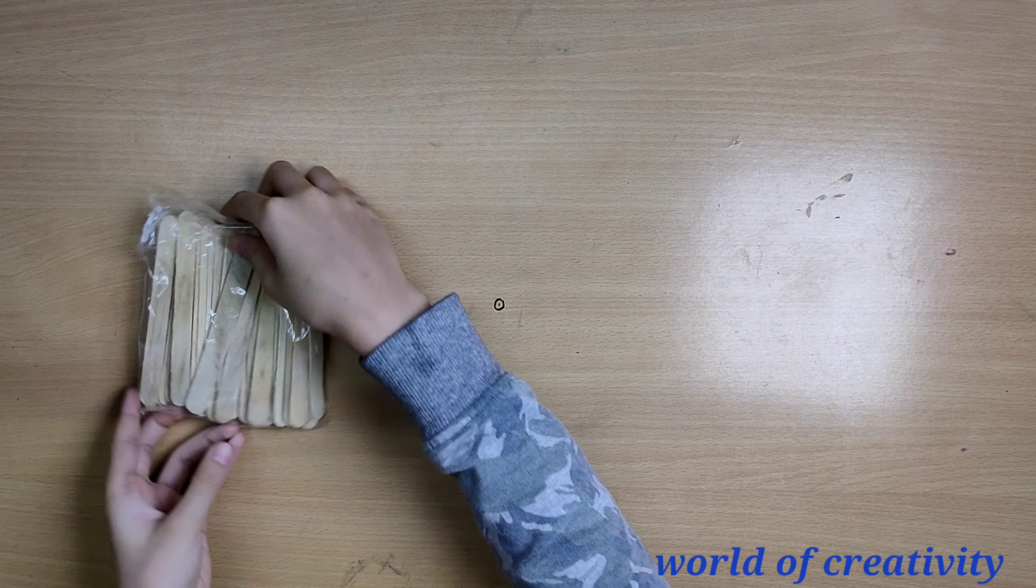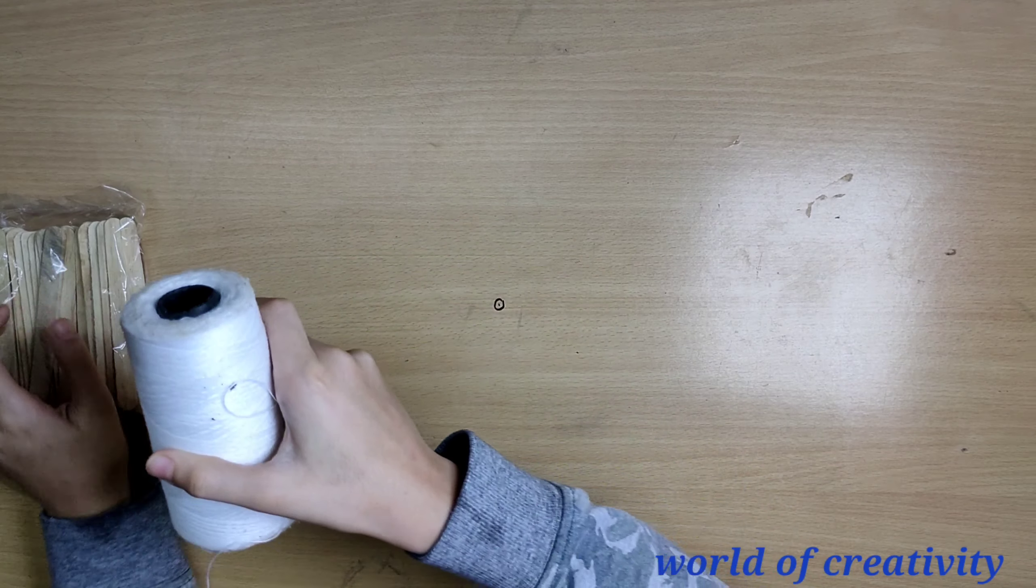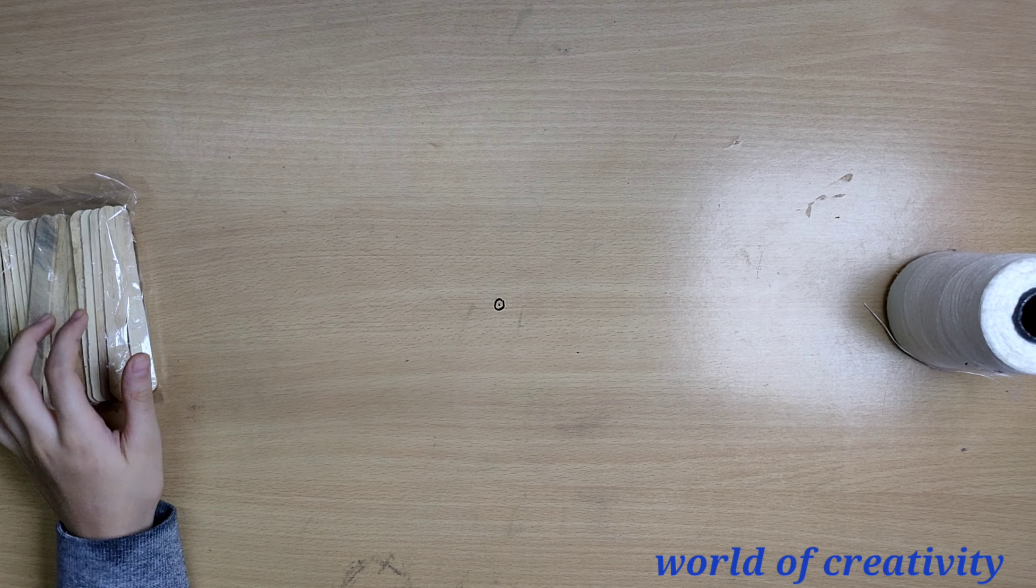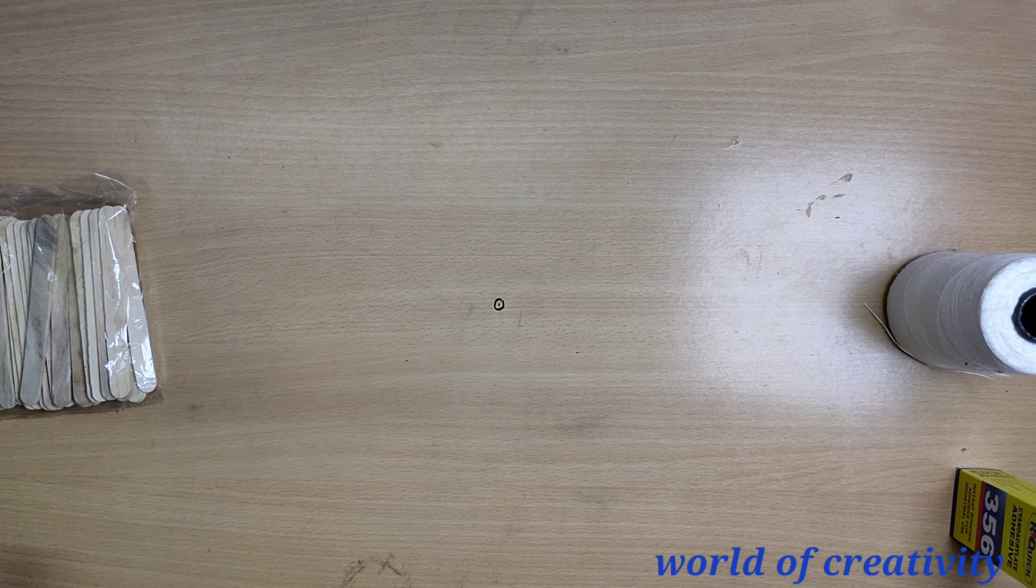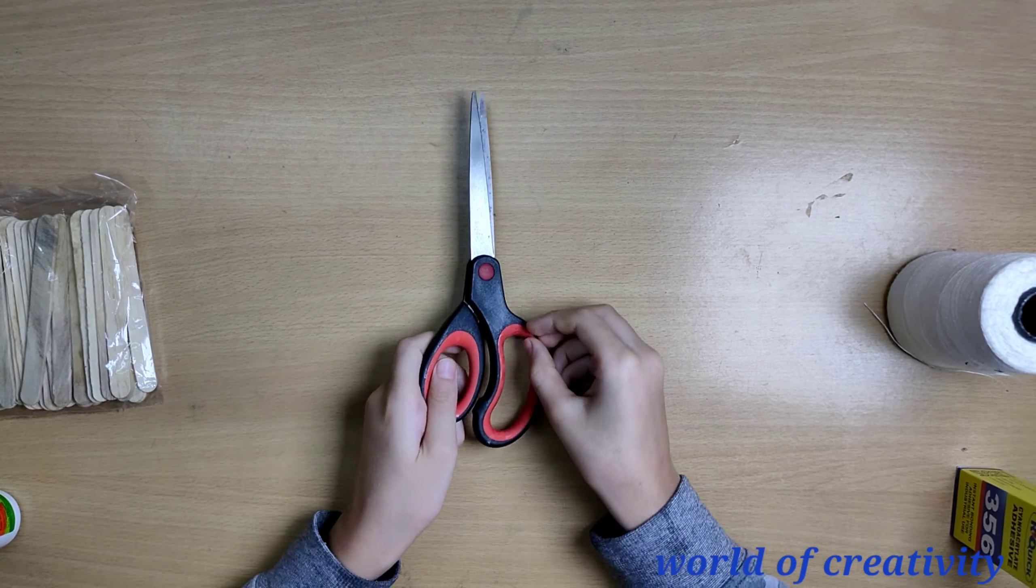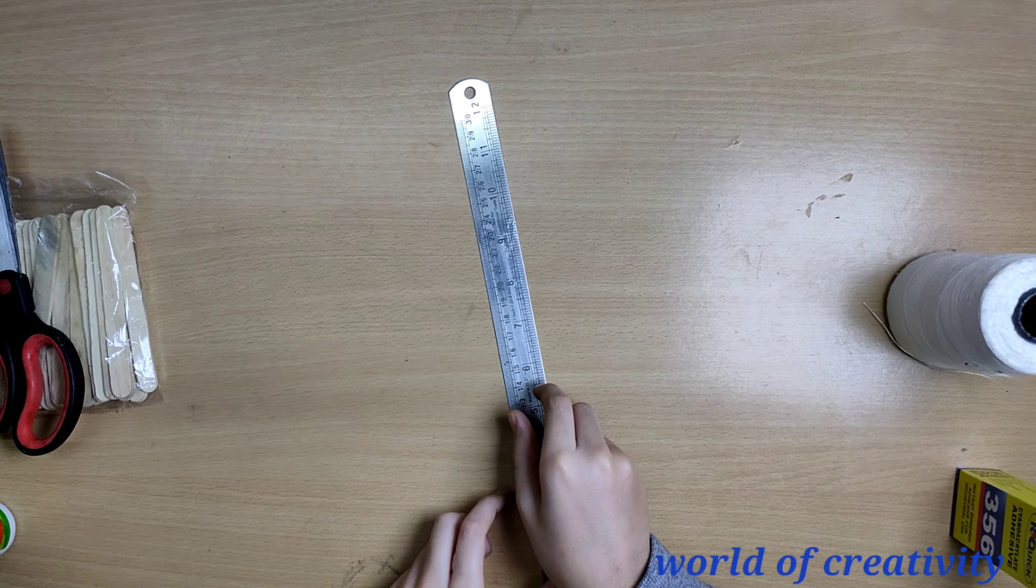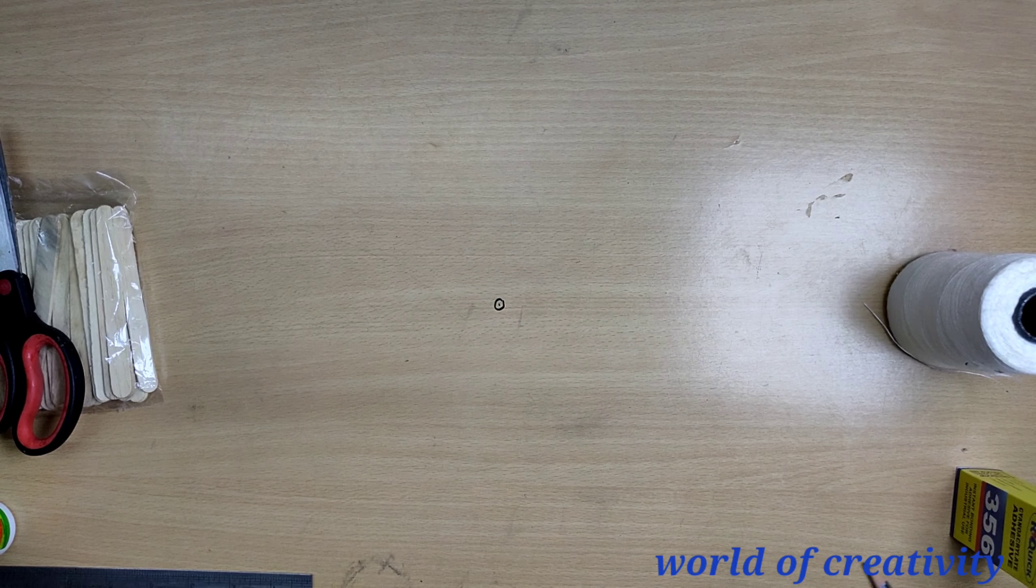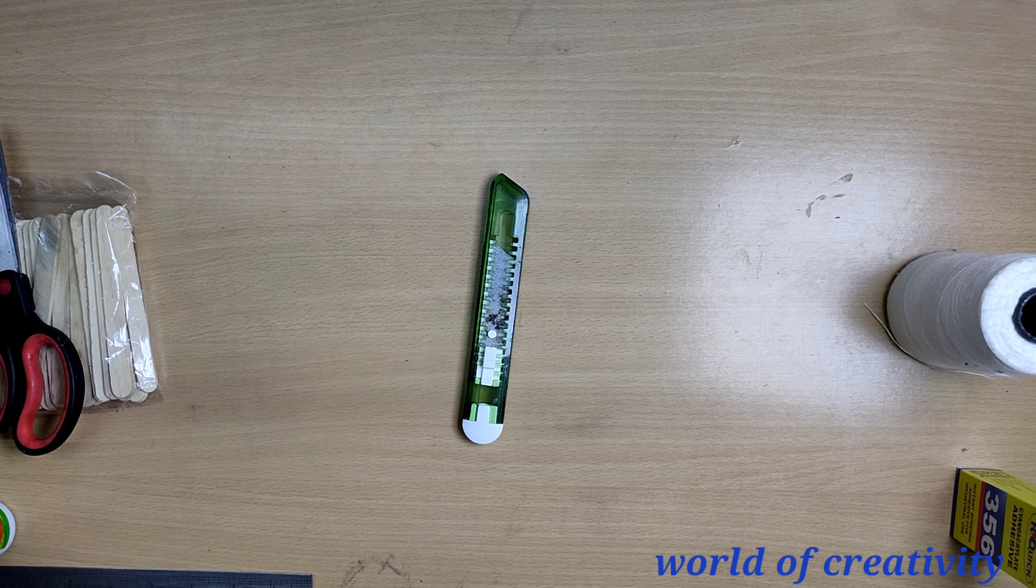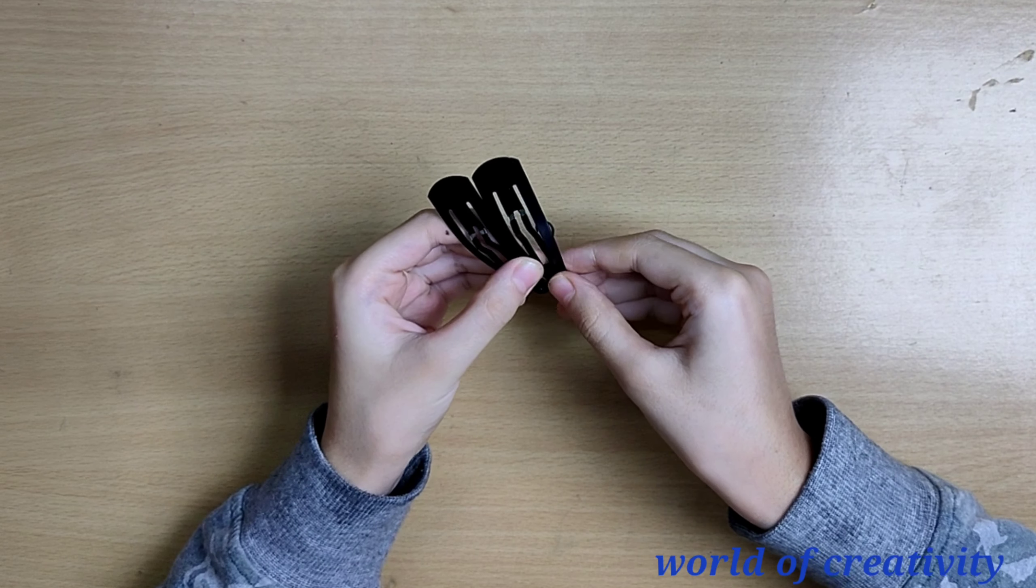You need popsicle sticks, thread, super glue, Favicol, scissor, ruler, pencil, paper cutter, and hair clips. You can get it in any store. This is how the packet looks.